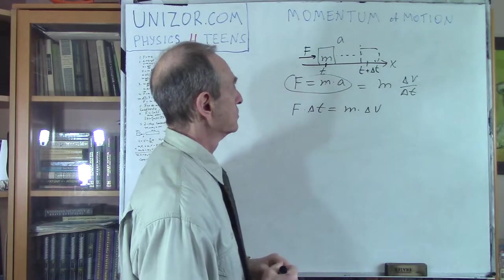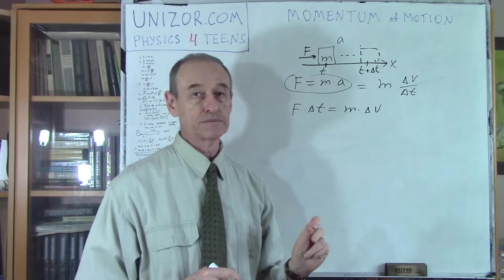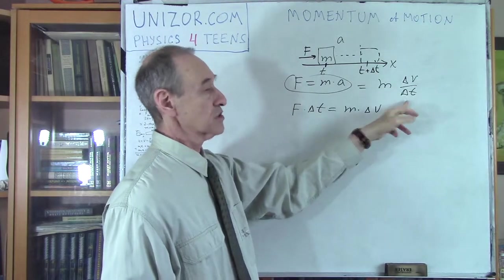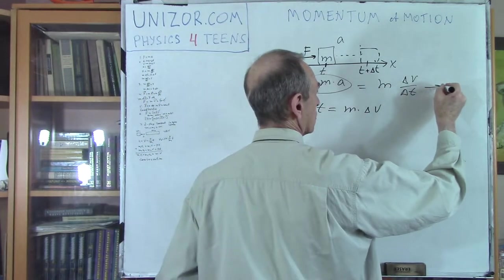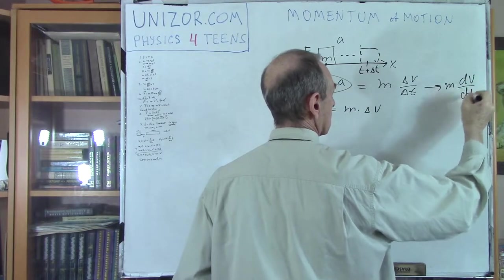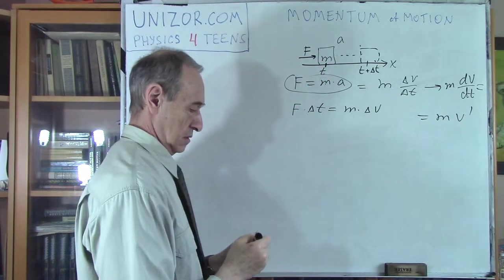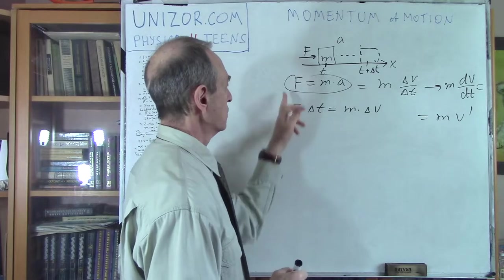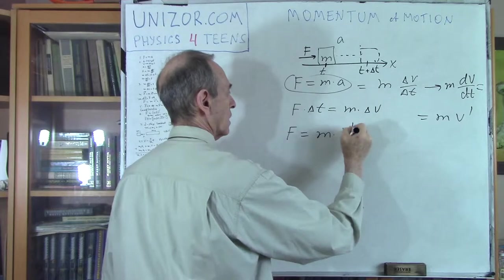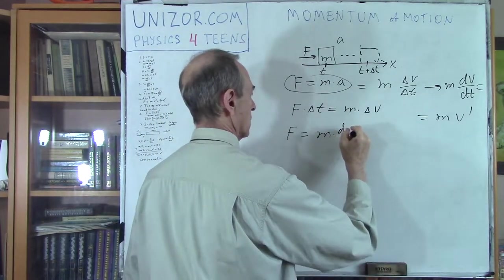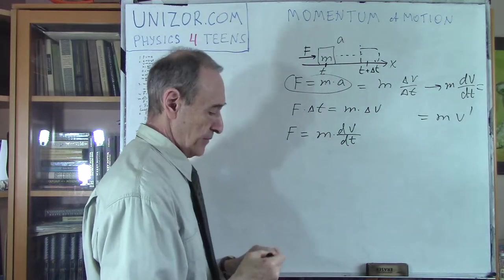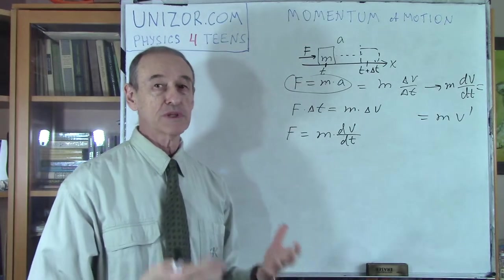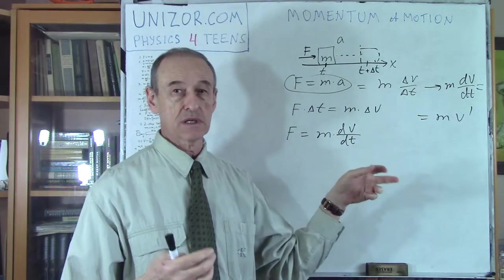Since this is true, let's just make our delta t smaller and smaller. We know from calculus that whenever it happens, delta V divided by delta T would be basically a derivative. So that goes to M dV by dt, or M v prime. This is a derivative of the speed.